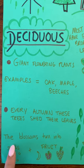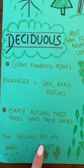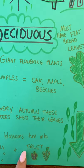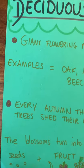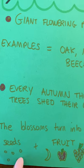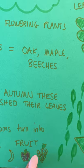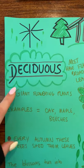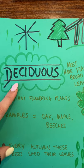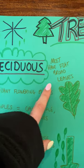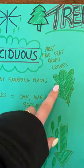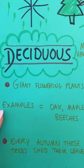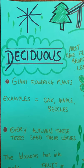Also, the blossoms, which are the seeds on the tree, turn into either seeds or fruit. So deciduous trees lose their leaves in autumn, have broad, flat leaves, and are giant flowering plants.